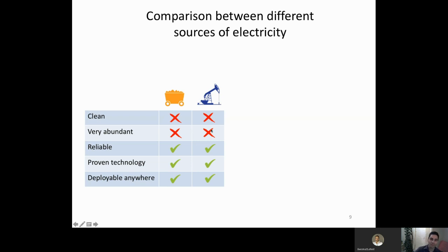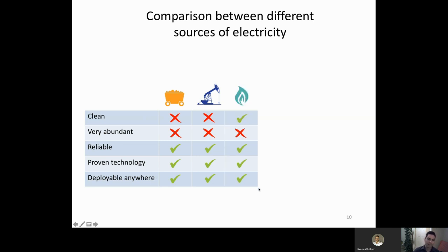Coal and oil are not abundant enough for us to rely mainly on them for centuries, especially at the production rates we want to reach. They are reliable and proven technologies that can be deployed anywhere, but not abundant enough. Gas is similar to other fossil fuels but much cleaner, so we could consider it clean.